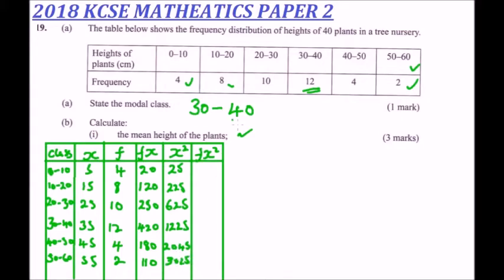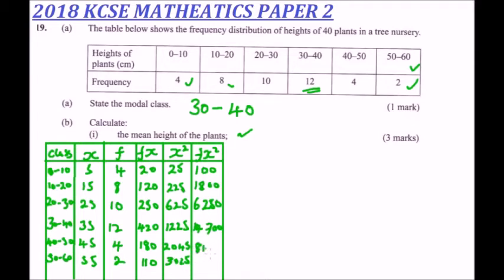Finally, we multiply frequency by X² for each class to get FX²: 4×25 = 100, 8×225 = 1800, 10×625 = 6250, 12×1225 = 14700, 4×2025 = 8100, and 2×3025 = 6050.